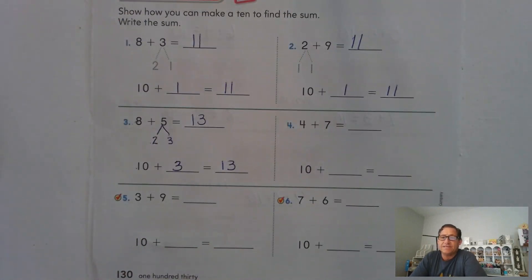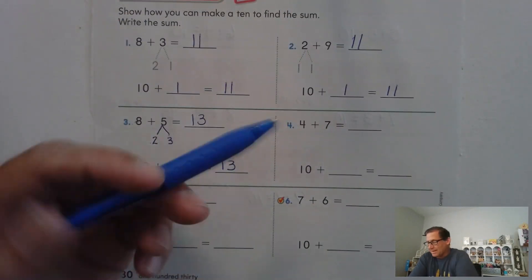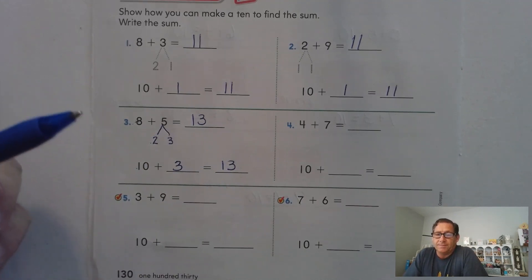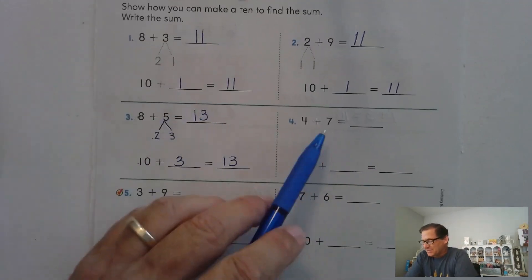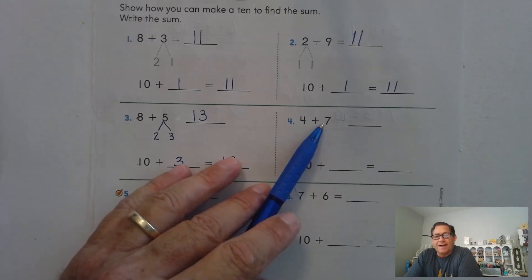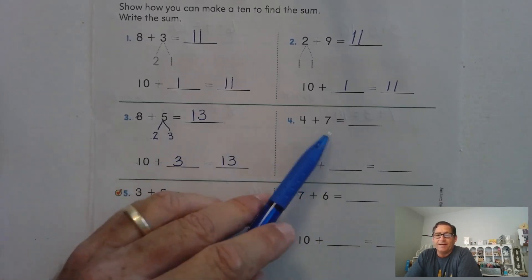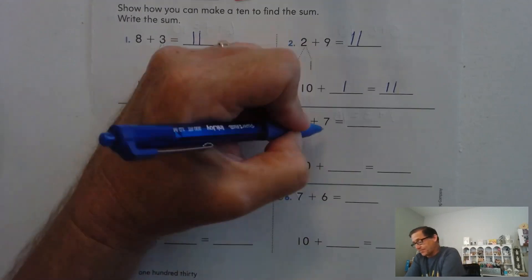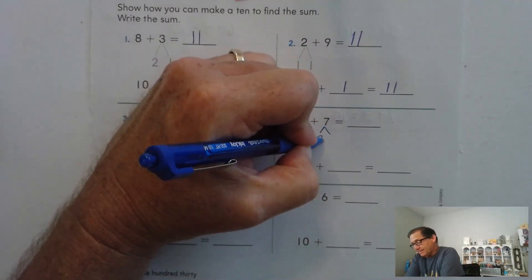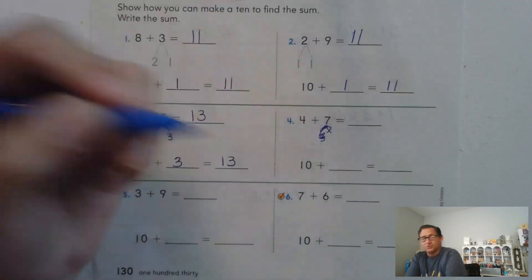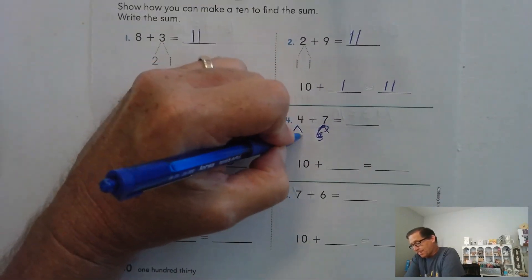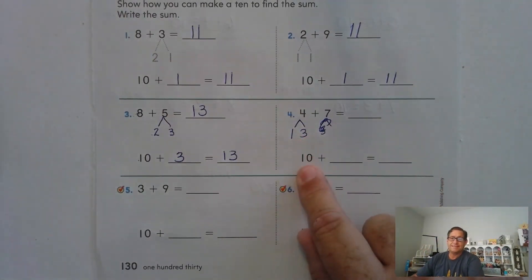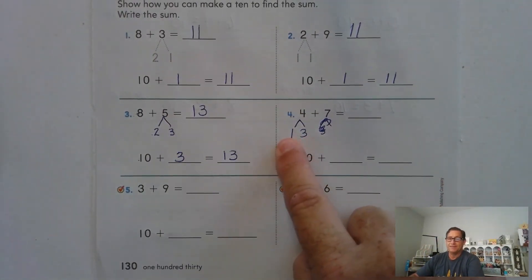Four plus seven equals what? It really doesn't matter which number we break apart to get the 10, but typically we want to start with the larger addend — which one is closer to 10? Seven plus what is 10? It's three. So seven plus three is 10, and now add the one.